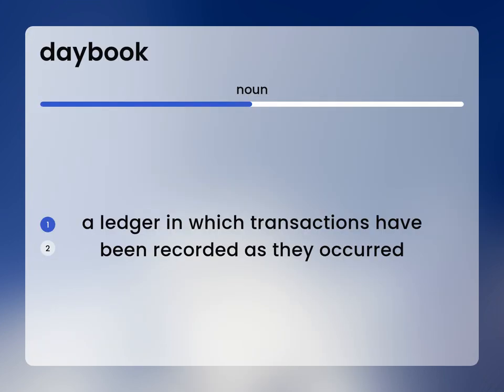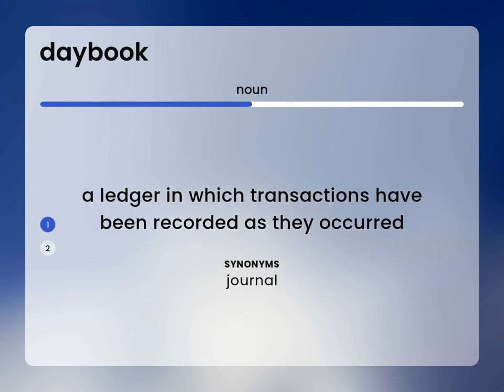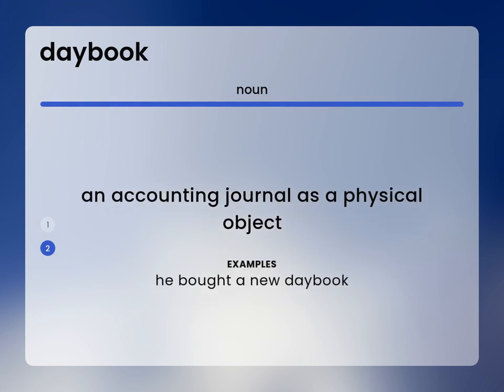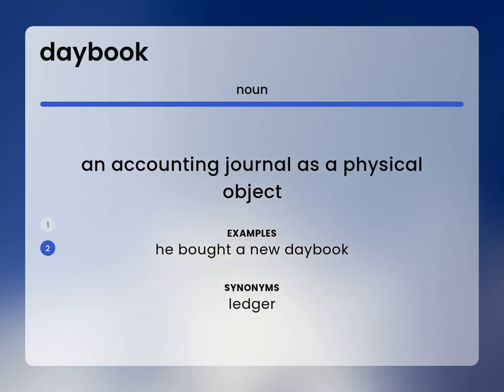A ledger in which transactions have been recorded as they occurred. Journal. An accounting journal as a physical object. He bought a new daybook. Ledger.